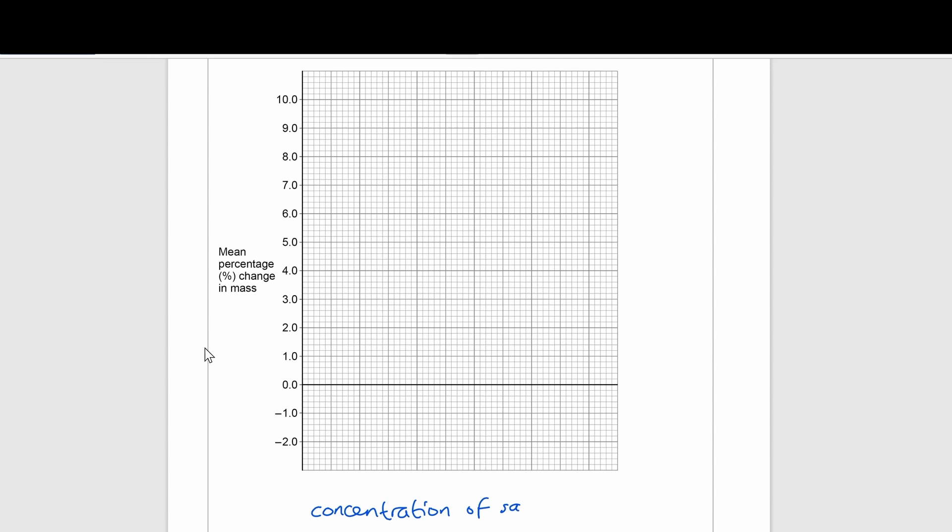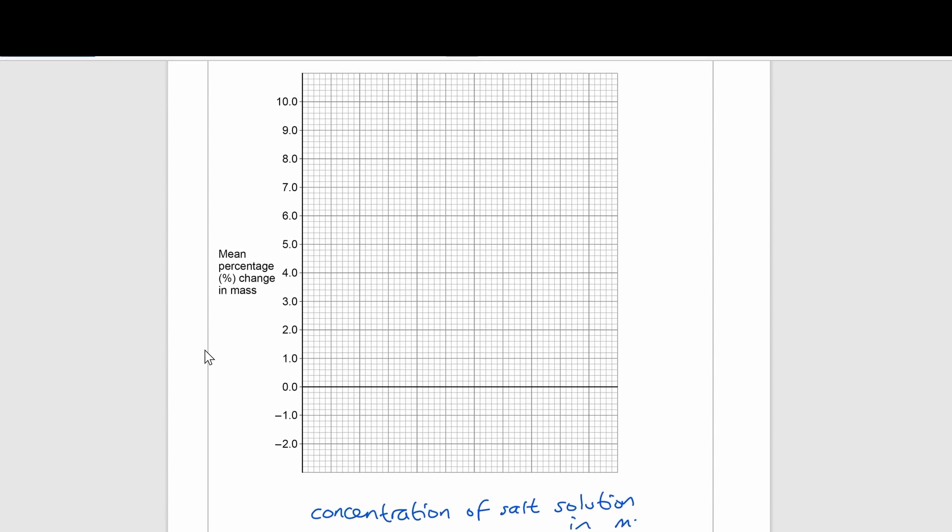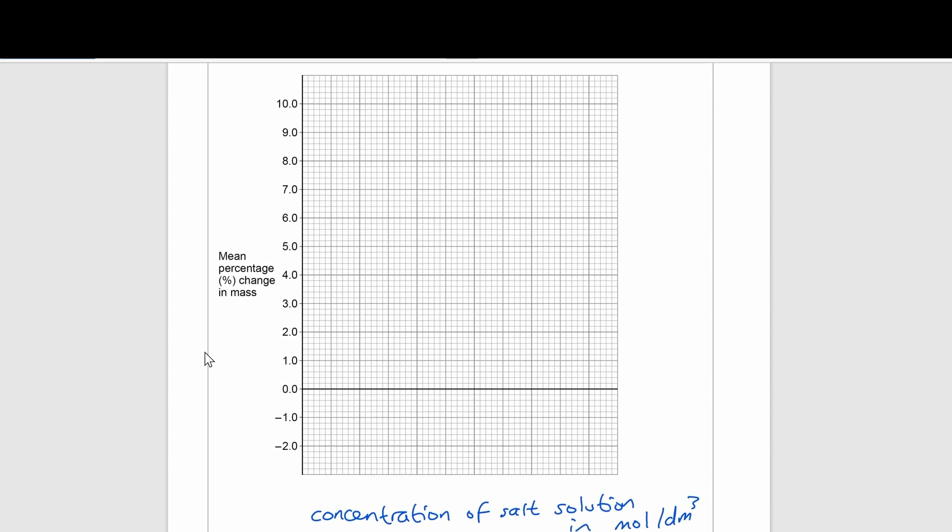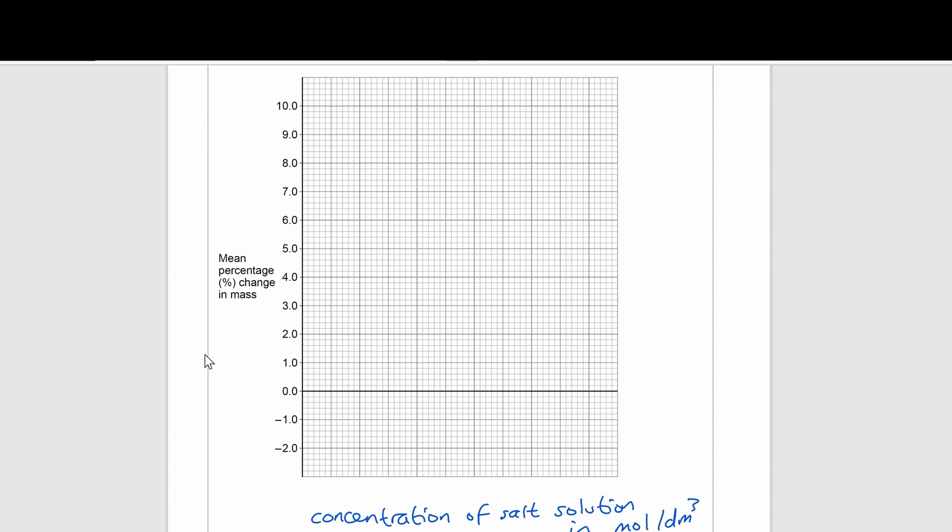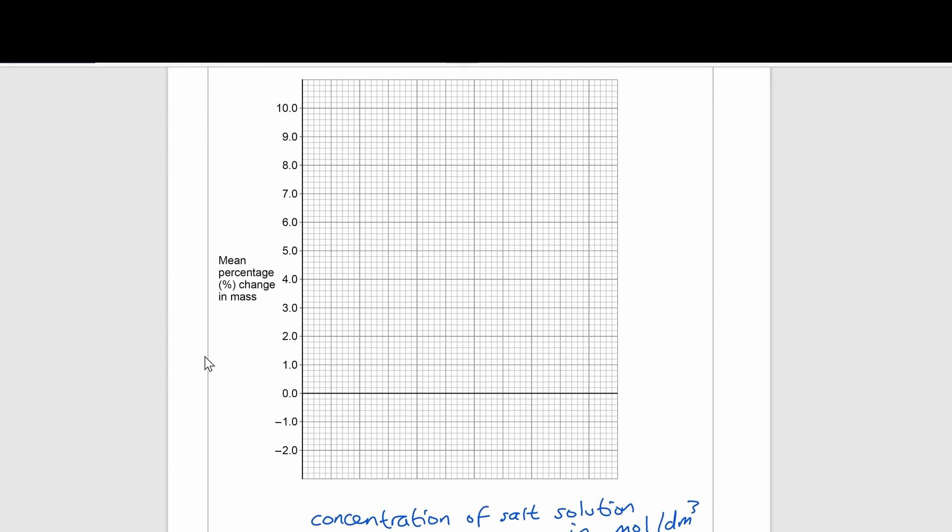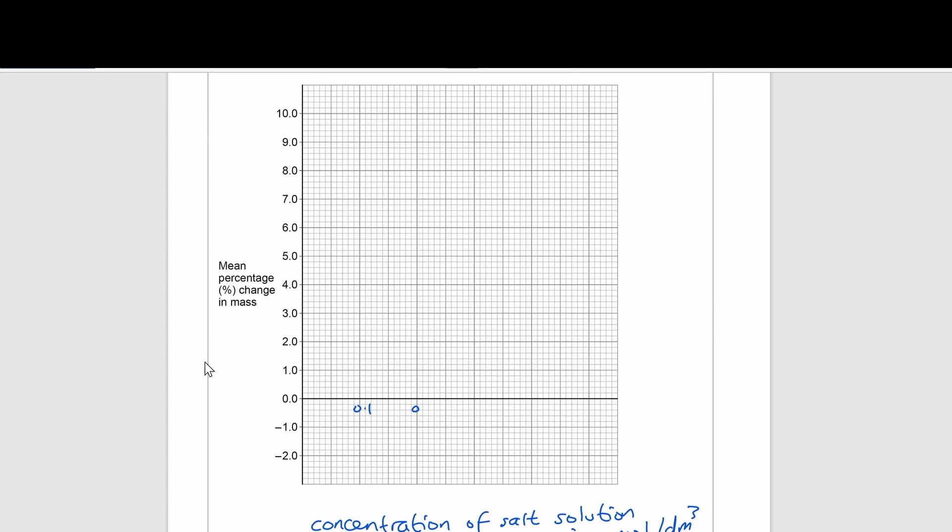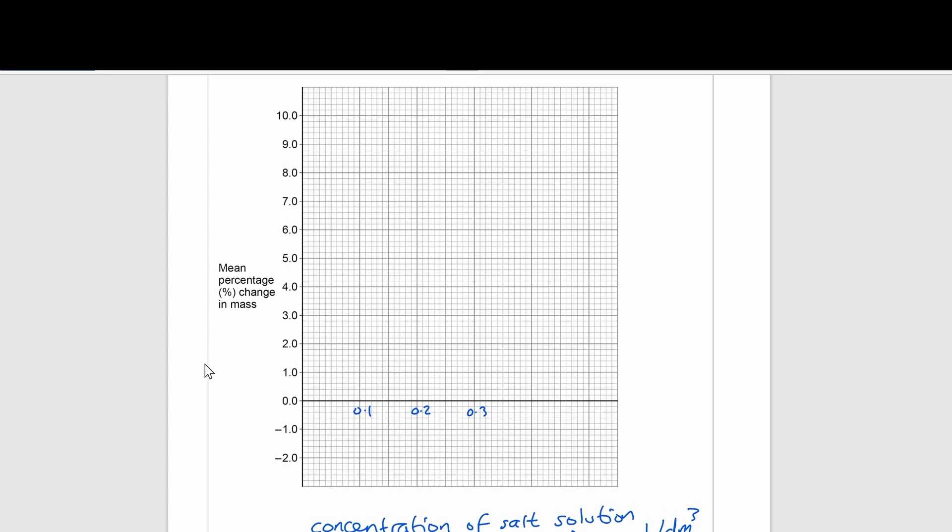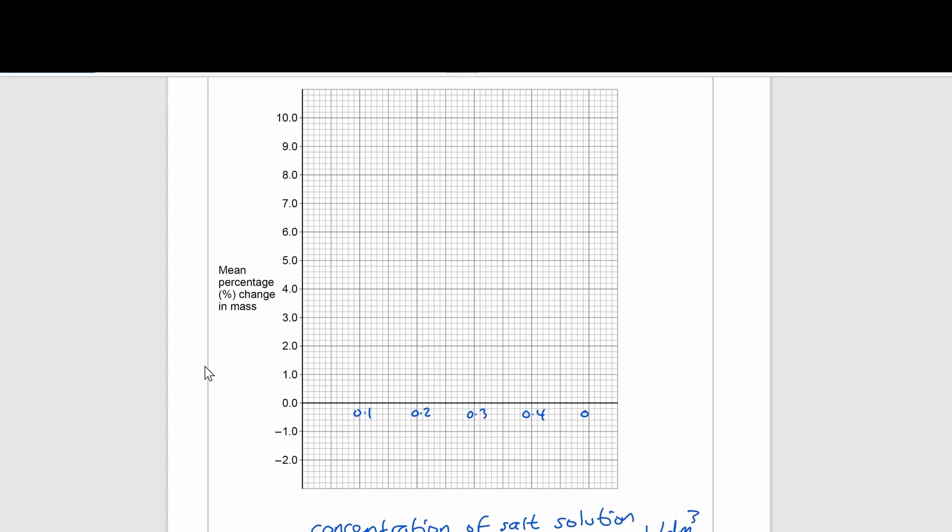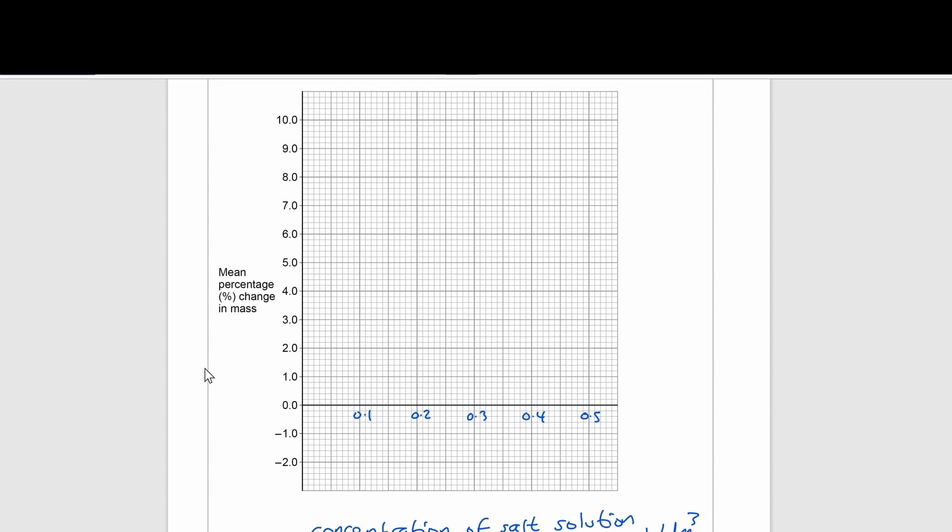Remember that from a results table there should at least be two columns. The first column will always be the independent variable and the second column will always be the dependent variable. If plotting that on a graph, that will mean that the independent variable should be on your x-axis and your dependent variable should be on your y-axis.